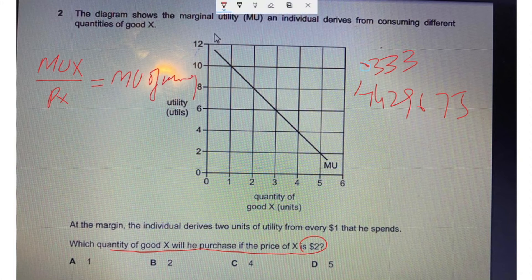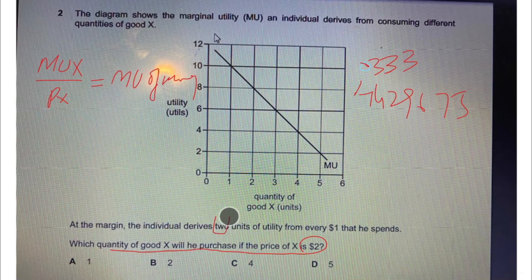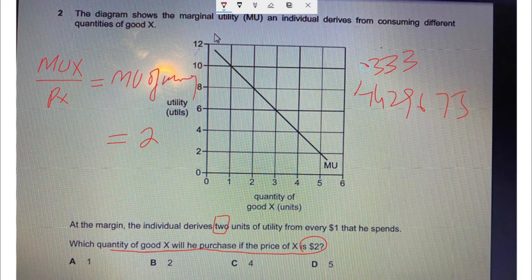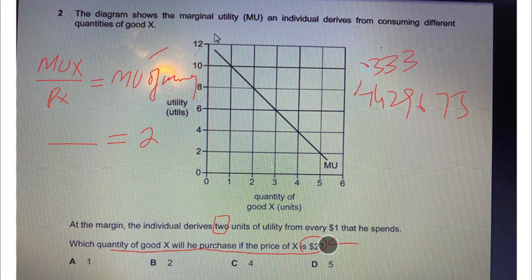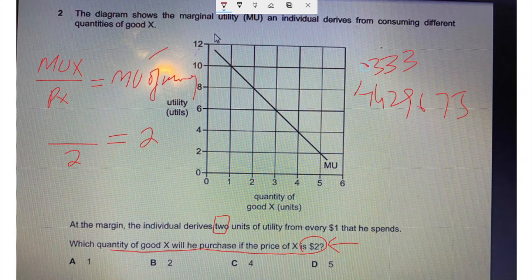Put the value 2 here. Now you need to find the marginal utility of X. The price of X is given as $2. You can place the price value here and write the marginal utility of X here.